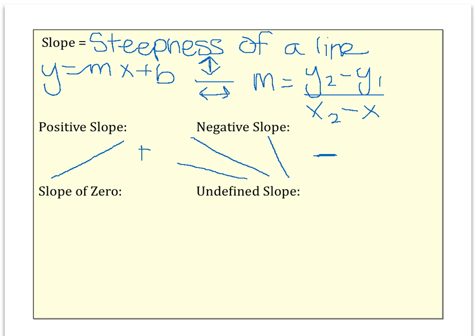A slope of zero is when you have a straight horizontal line and undefined slope is when you have a vertical one. I always remember the two being that when you have a slope of zero, think of it like skiing.